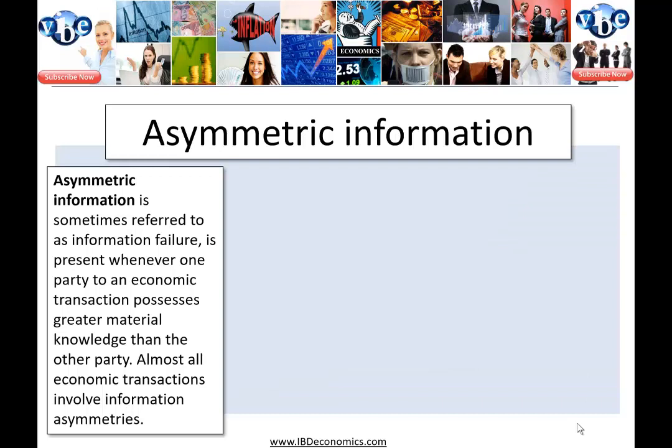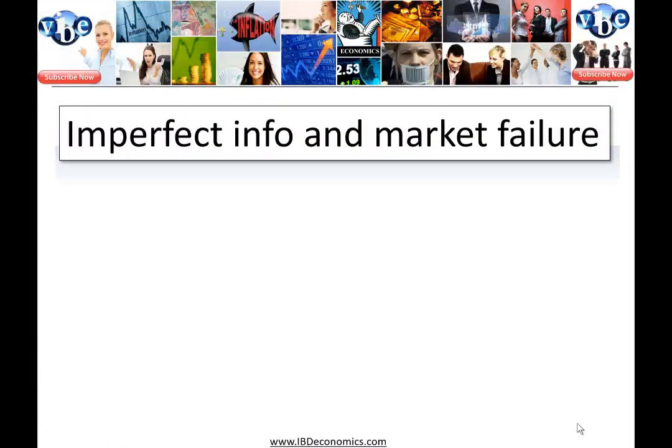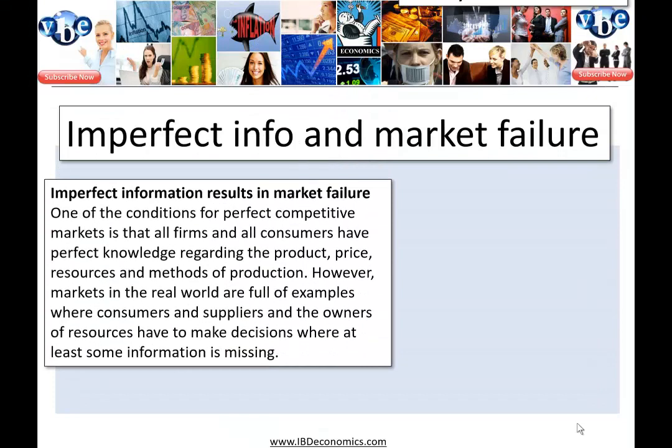This is all about information failure. It happens whenever one party to an economic transaction — the buying or selling of a good or service — possesses greater knowledge than the other party. Just about all economic transactions involve information asymmetries, and they lead to market failure — imperfect information and market failure.